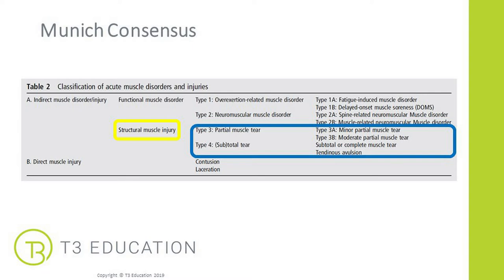Type 4 is a subtotal tear — a bigger tear of the tissue. That's divided into either a subtotal or complete tear, or a tendon avulsion where the tendon comes away from the bone. We're going to look at those in a little bit more detail.